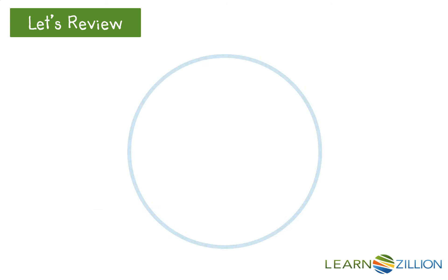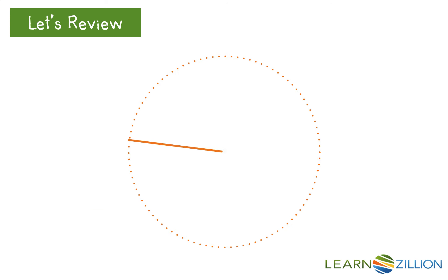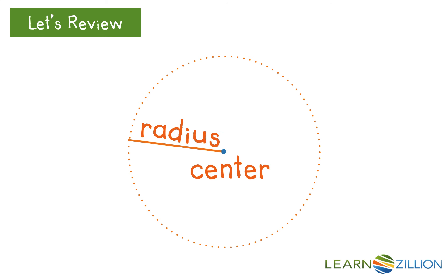Let's look at circles. A circle is a set of all points that are equidistant from a specific point in the plane. This point is called the center of the circle, and the distance between any point on the circle and the center is called the radius.